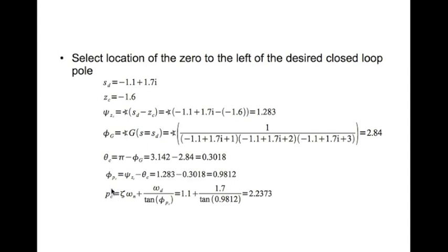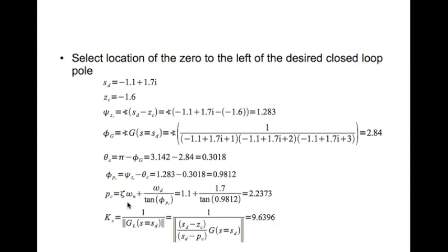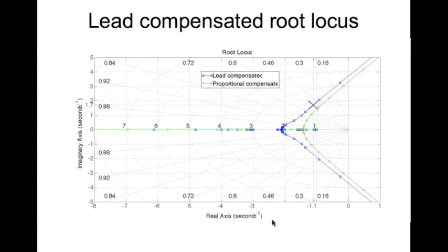From phi_pc, we find the controller pole location as pc = 2.2373. The proportional gain kc is found as 1 / |GL evaluated at sd|, where GL is the controller transfer function multiplied by the plant, giving kc = 9.6396. Plotting the lead-compensated root locus (blue curve) alongside the plain proportional-compensated plant (green curve), the lead-compensated system passes through the desired closed-loop pole location, confirming the design. That's the end of lead-compensated root locus design.